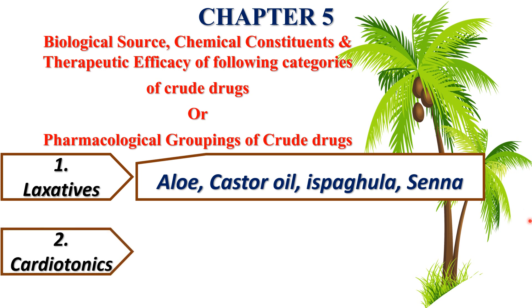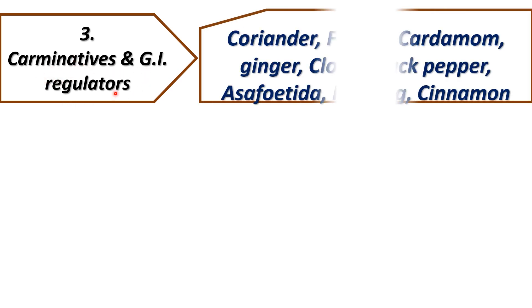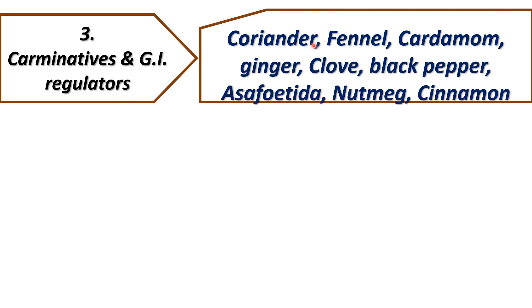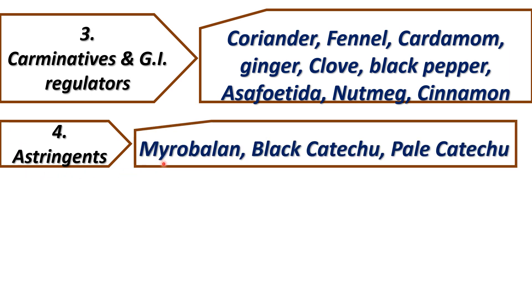The second subcategory is cardiotonics, where we will study digitalis and arjuna. Third is carminatives and gastrointestinal regulators — drugs include coriander, fennel, cardamom, ginger, clove, black pepper, asafoetida, nutmeg, and cinnamon. Fourth is astringents, covering myrobalane, black catechu, and pale catechu.